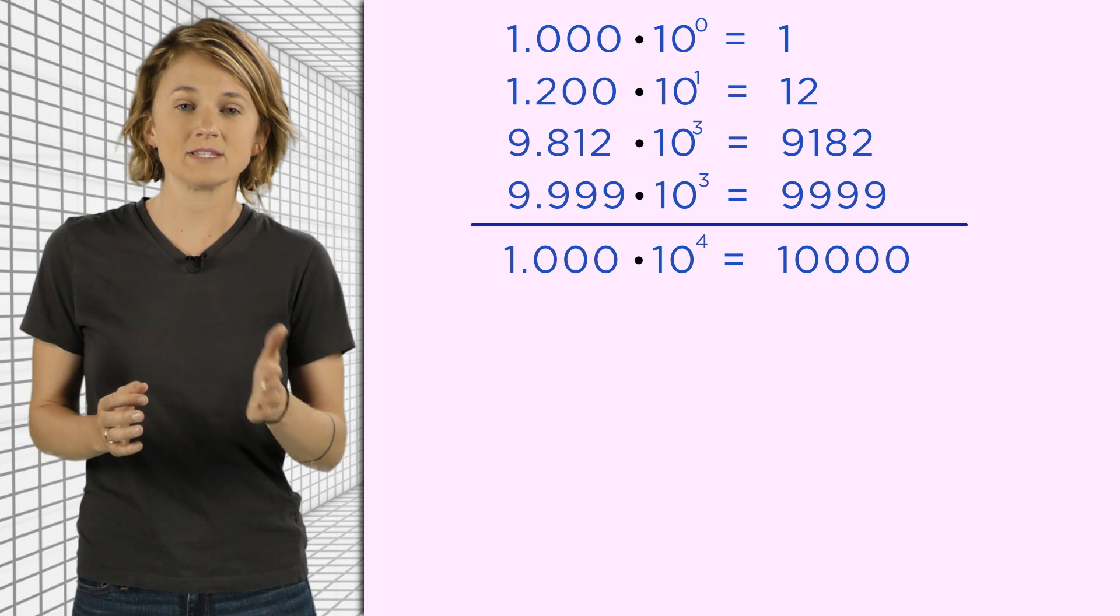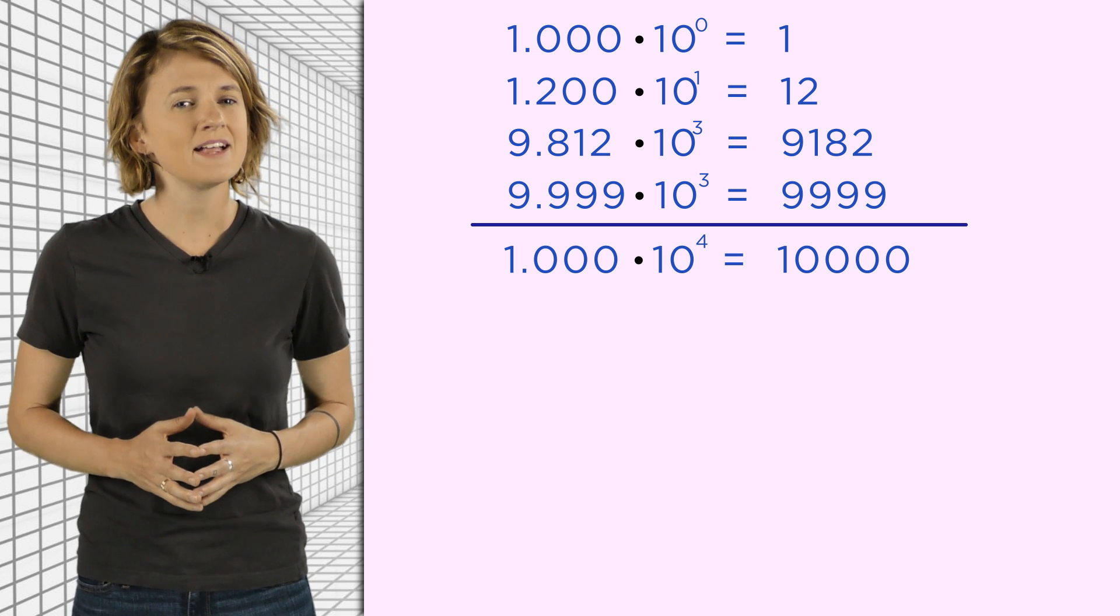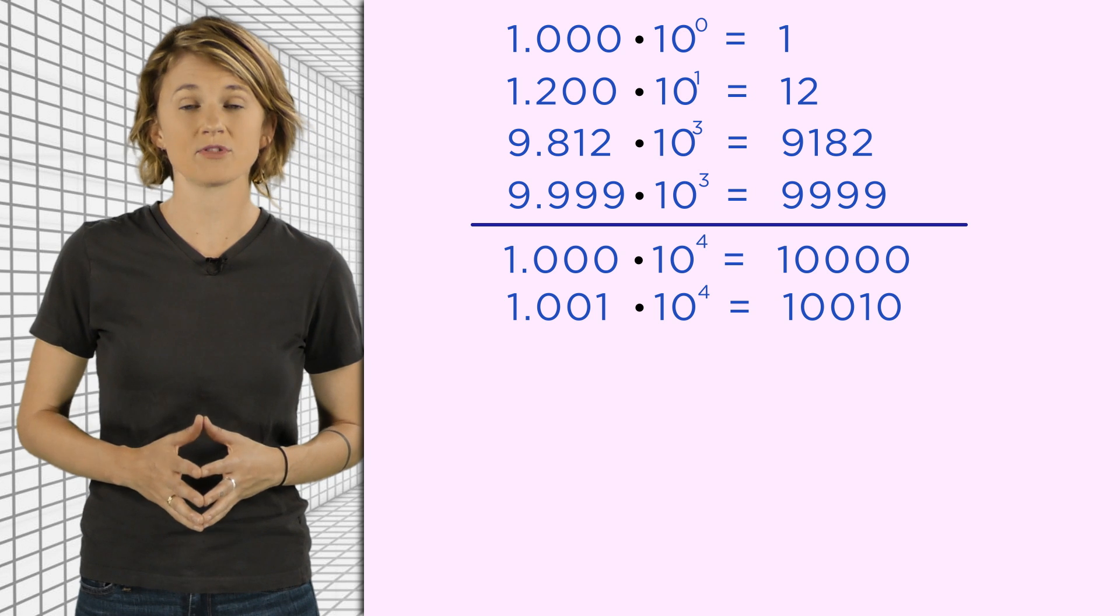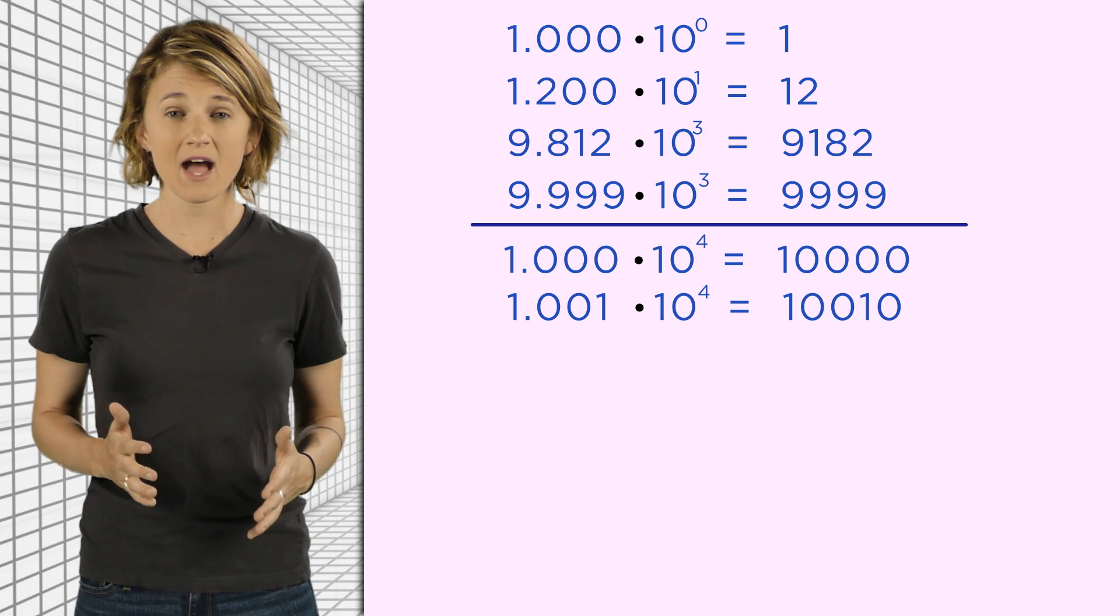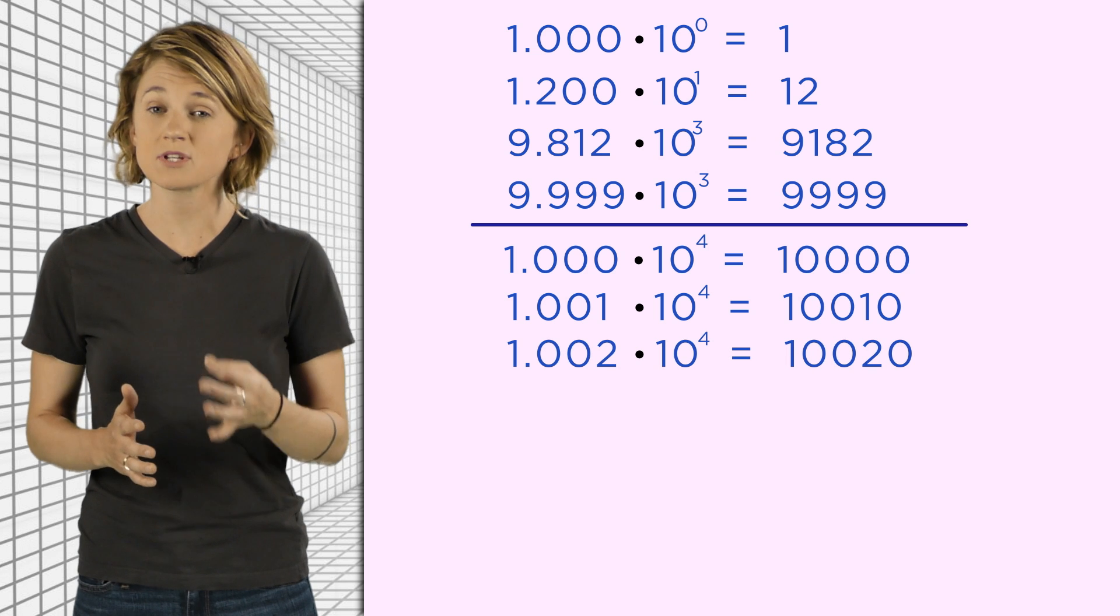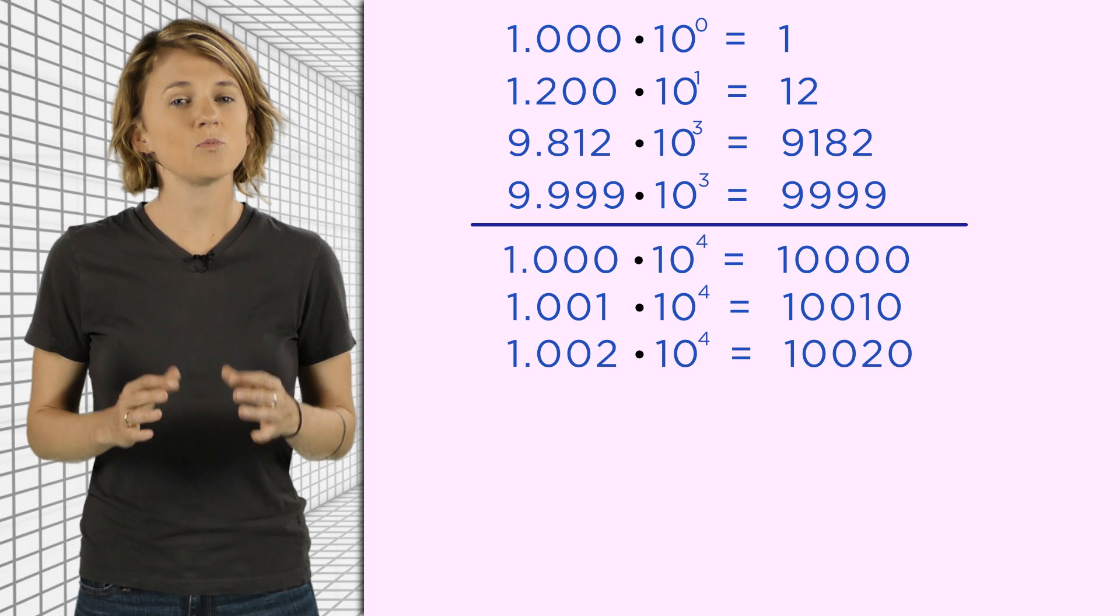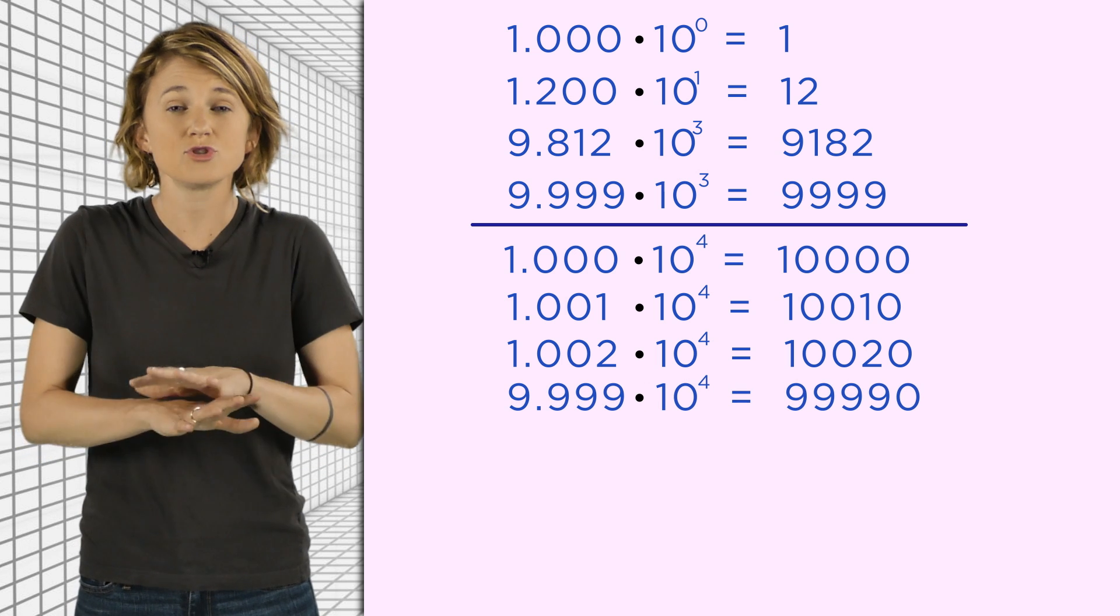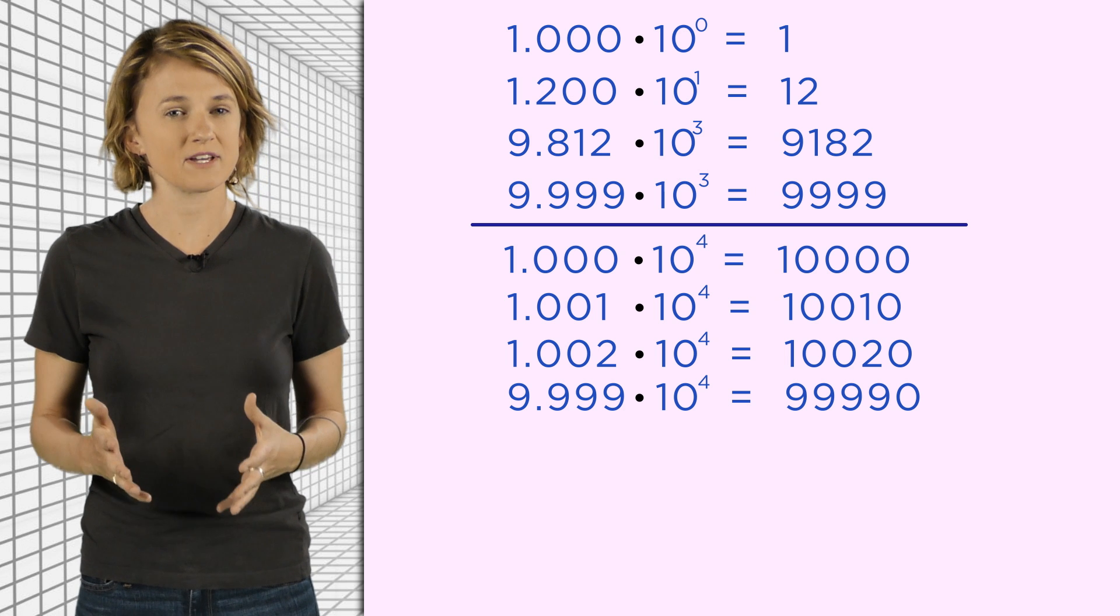What happens next? Well, we can write 1.000 times 10 to the fourth to get 10,000. But then, the next number is 1.001 times 10 to the fourth, which is 10,010. And the next number after that is 1.002 times 10 to the fourth, which is 10,020. Suddenly, we can only represent the integers that are a multiple of 10. There's no way to represent 10,004 using only four significant digits.